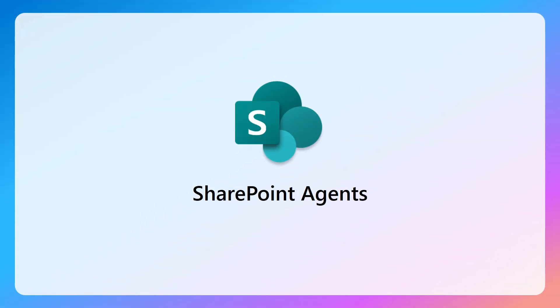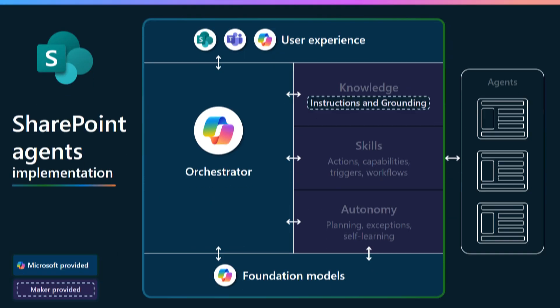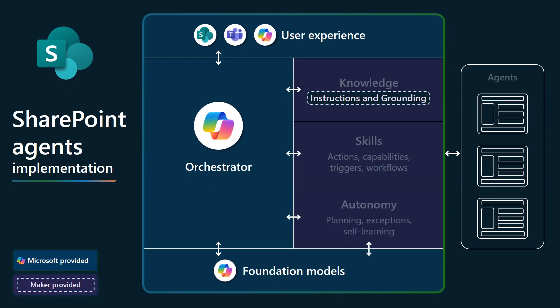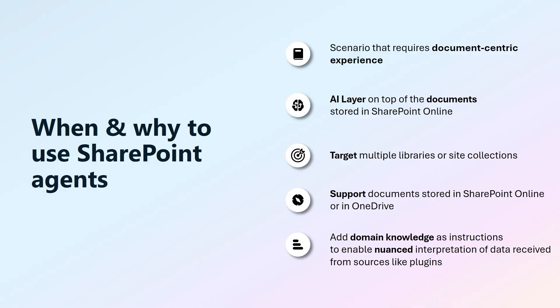Next, let's look at SharePoint Agents. These agents focus on document-centric experiences and are designed to work with documents stored in SharePoint Online and OneDrive. SharePoint Agents rely on the Microsoft 365 Copilot foundational model and orchestrator, and are built on top of documents, libraries, or sites in SharePoint Online. They can be used inside the SharePoint Online UX or shared in Microsoft Teams for group chats. Use SharePoint Agents when you need a document-focused experience, want to add an AI layer over SharePoint and OneDrive documents, or need to target multiple libraries or site collections. You can add domain knowledge for more nuanced data interpretation.